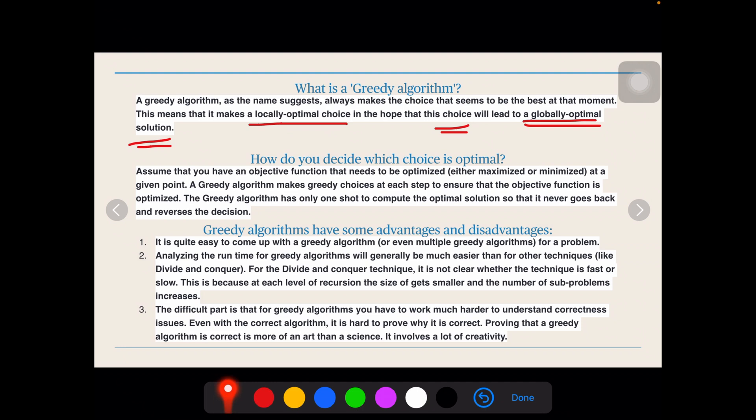How do you decide which choice is optimal? Assume that you have an objective function that needs to be optimized, either maximized or minimized, at a given point. A greedy algorithm makes greedy choice at each step. So at each step, a greedy algorithm would make a choice that the next step should be the minimum or the maximum according to the question. The greedy algorithm has only one shot to compute and it never goes back and reverses the decision. Well, let us look at a very beautiful example right now.